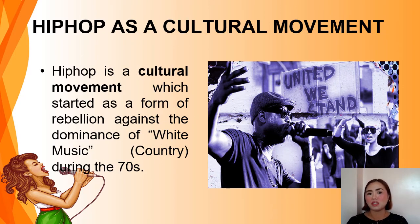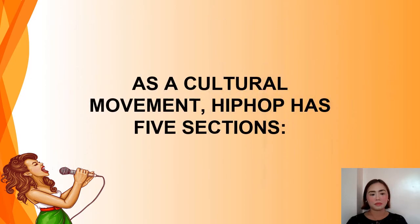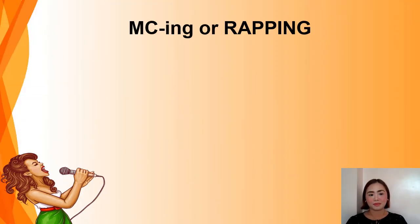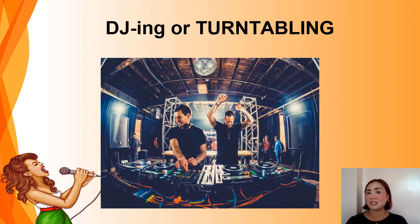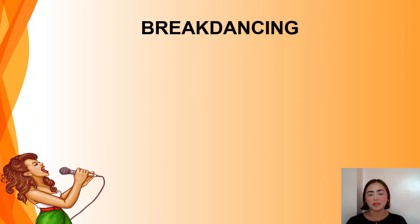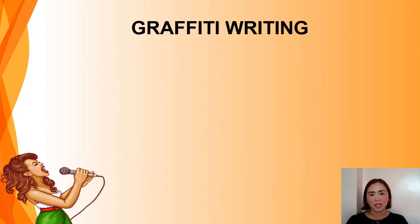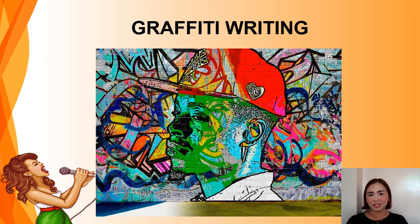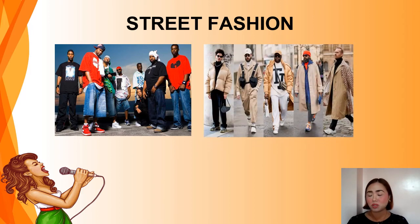Hip-hop music is a cultural movement, which started as a form of rebellion of the Latino and African American people against the dominance of so-called white music or country music during the 1970s. As a cultural movement, hip-hop has five sections: the first is emceeing or rapping; the second is DJing or turntabling; the third, when it comes to dance, is break dancing; when it comes to visual art, the hip-hop movement started graffiti writing; and when it comes to fashion, the hip-hop movement influenced the so-called street fashion.